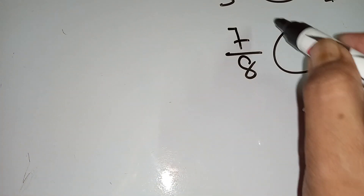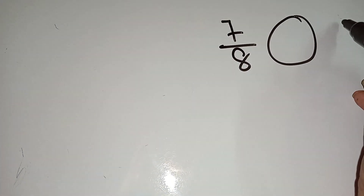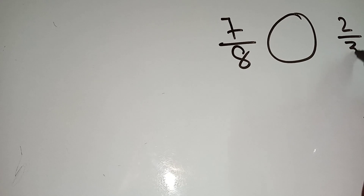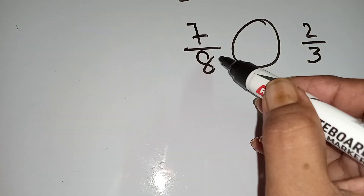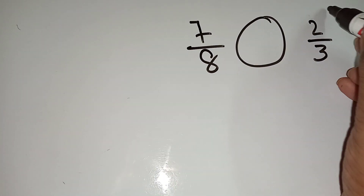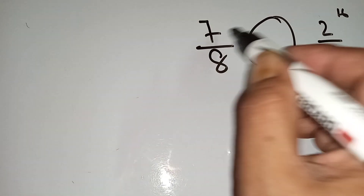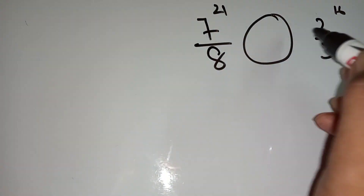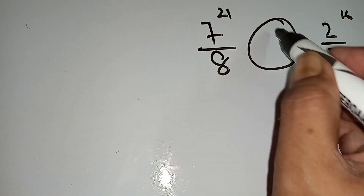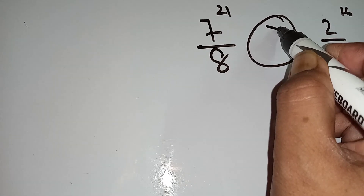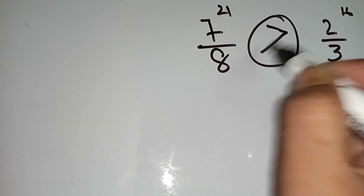7 by 8, arrow 2 by 3. Now you multiply 8 into 2 — 16. And 7 into 3 — 21. That means 21 is greater than 16, then you will give this sign.